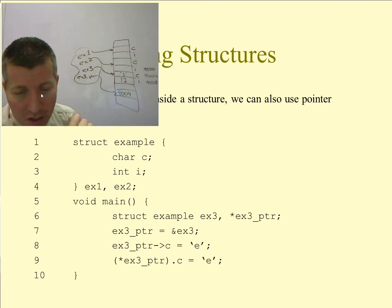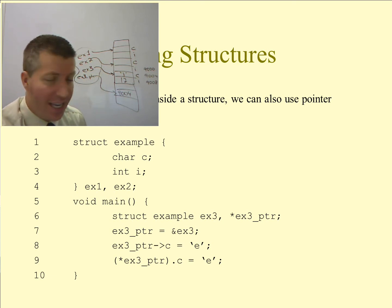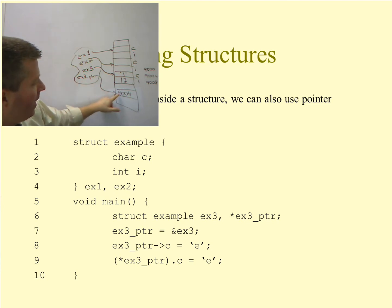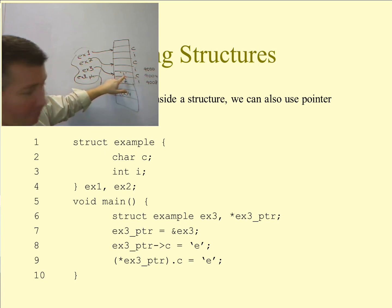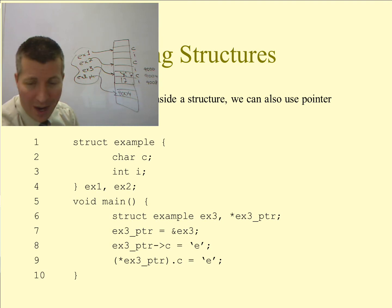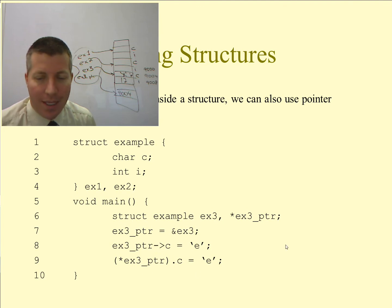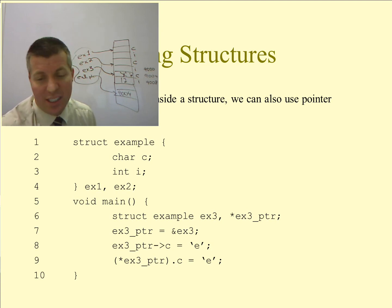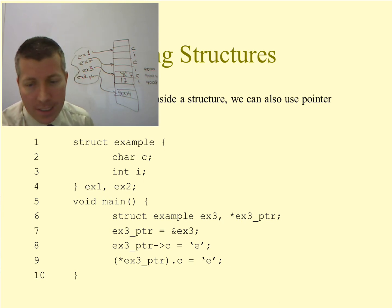Line nine is dereferencing ex3_pointer and then getting c out of it. ex3_pointer holds 9004, so it goes to that location and grabs variable c — in this case it would overwrite the j to be an e. Another way to do that exact same thing is pointer notation: the dash followed by the greater-than sign, which looks like an arrow. Lines eight and nine are exactly the same — there's absolutely no difference between them. The difference is just syntax: whether you dereference it yourself and get variable c, or whether you use arrow notation, which dereferences it for you.